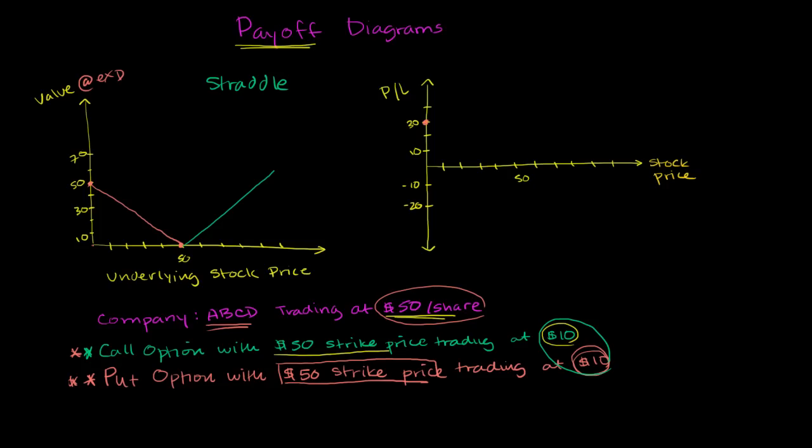And at the point where we're not exercising either option because they're both essentially worthless—no reason to exercise them—then we essentially have just lost $20 for both options. So we will be down over here. And then anything above $50 will start to make money.